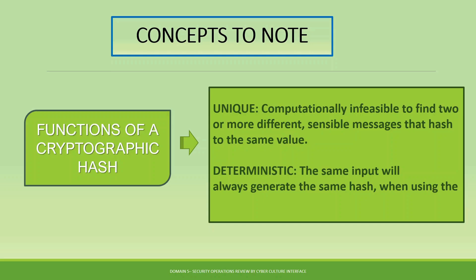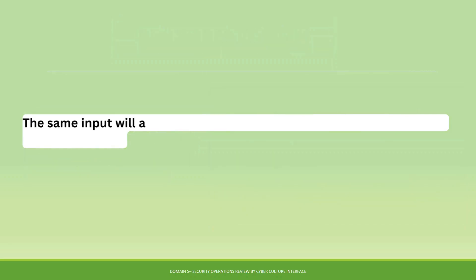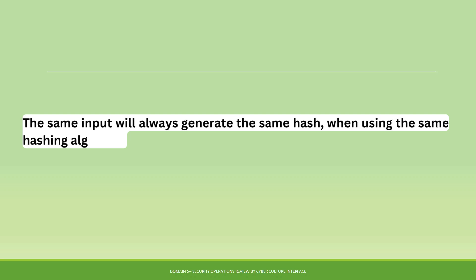This deterministic property helps verify integrity. If I send you a document and tell you the hash value, you can store that hash safely. Later, when you want to confirm the document has not changed, you apply the same hashing technique — if you get the same hash value, the document is intact. If you get a different hash value, something has happened to the document; it has either been corrupted or someone has interfered with it.